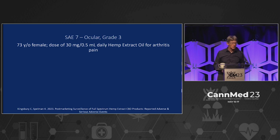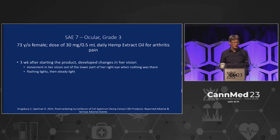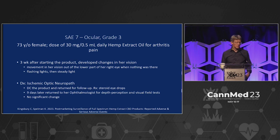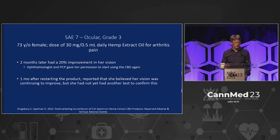The last SAE: 70-year-old female, dose of 30 milligrams daily hemp oil extract for arthritis pain. Three weeks after starting the product, she developed changes in her vision — movement in her vision out of the lower part of her right eye when nothing was there, flashing lights and steady lights. Diagnosed with ischemic optic neuropathy. They discontinued the product and she returned for follow-up on steroid eye drops. Nine days later, returned to her ophthalmologist for depth perception and visual field test with no significant change. Two months later she had a 20% improvement in her vision. Her ophthalmologist and PCP gave permission to restart the CBD, and one month after restarting she reported her vision was continuing to improve. It doesn't sound very likely as a causative relationship.